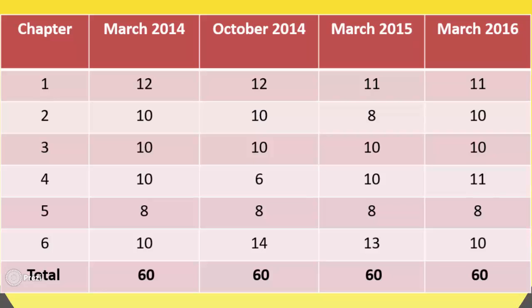Chapter 3: in March 2014 it had 10 marks, in October 2014 it had 10 marks, and in March 2015 and March 2016 it had 10 marks each. Chapter 4: in March 2014 it had 10 marks, in October 2014 it had 6 marks, in March 2015 it had 10 marks, and in March 2016 it had 11 marks. Chapter 5: in March 2014 it had 8 marks, in October 2014 it had 8 marks, and in March 2015 and March 2016 it had 8 marks each.